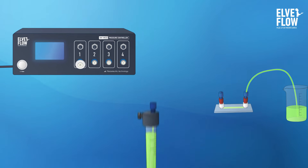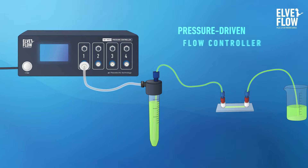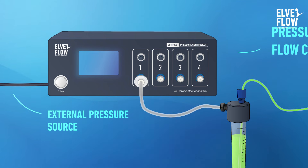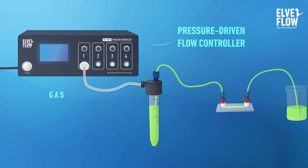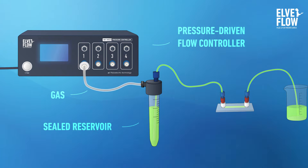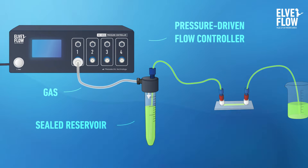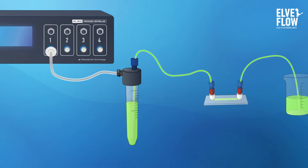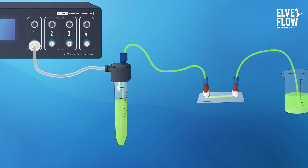The last method to move liquids uses a pressure-driven flow controller. Connected to an external pressure source, this instrument is used to provide an accurate gas pressure to a sealed reservoir filled with liquid. The pressure pushes the liquid and makes it flow through your microfluidic device.